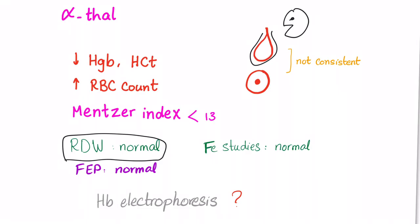RDW is normal because it's a genetic problem, not a nutritional deficiency. Iron study is normal. FEP, the free erythrocyte protoporphyrin, is normal because it's not a heme problem, it's a globin problem. What about hemoglobin electrophoresis? It depends.